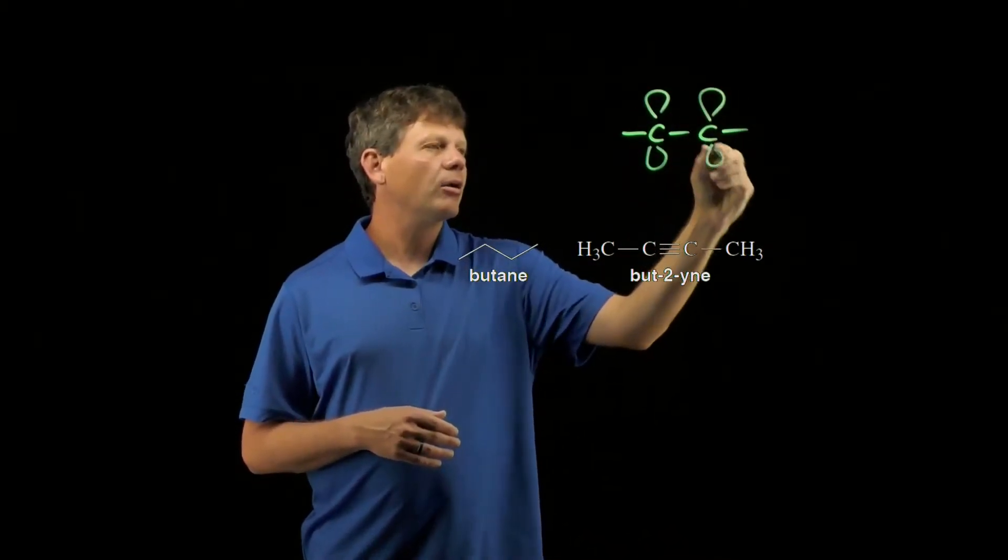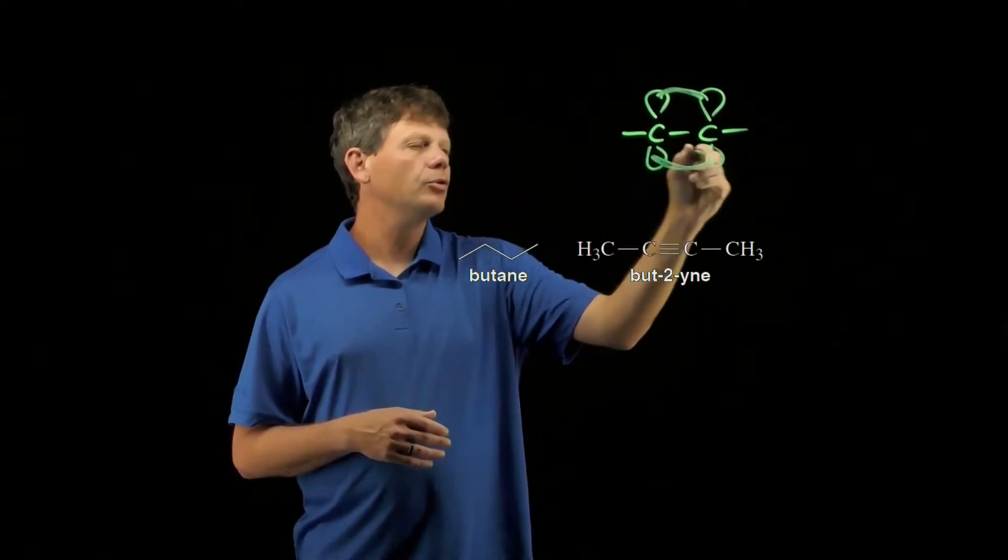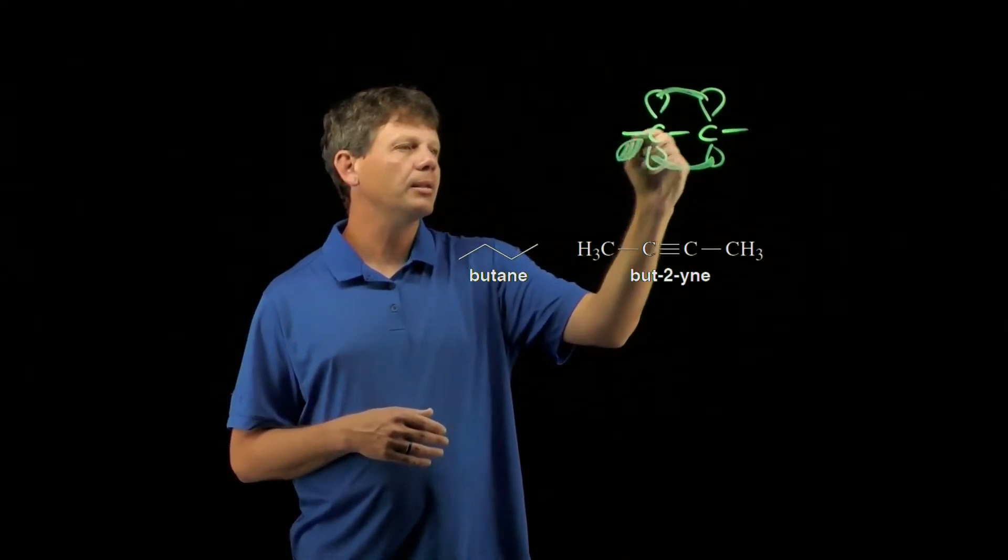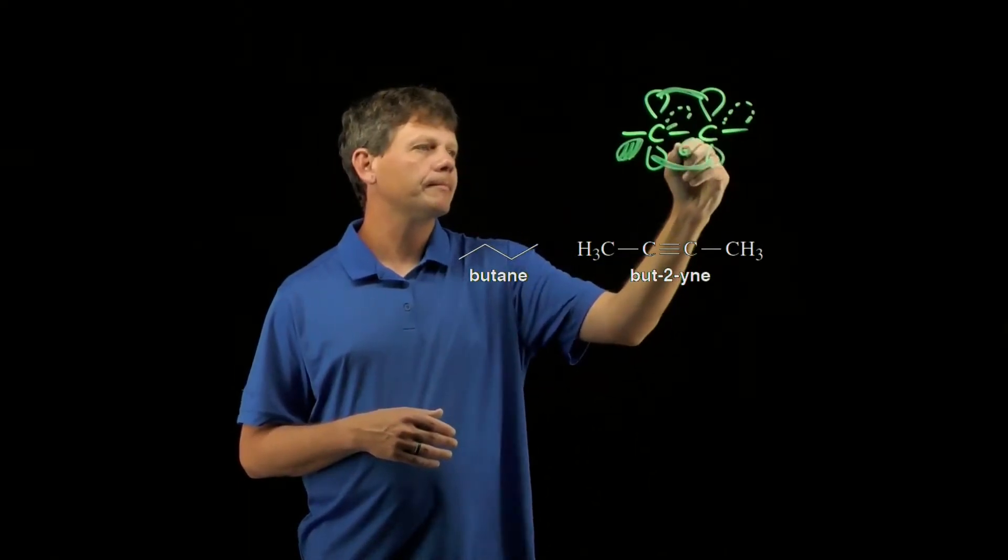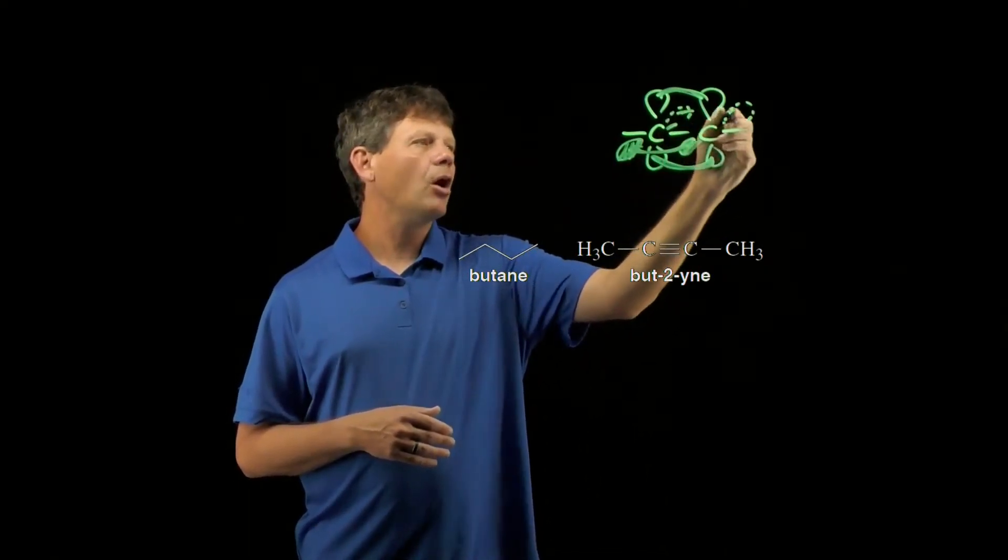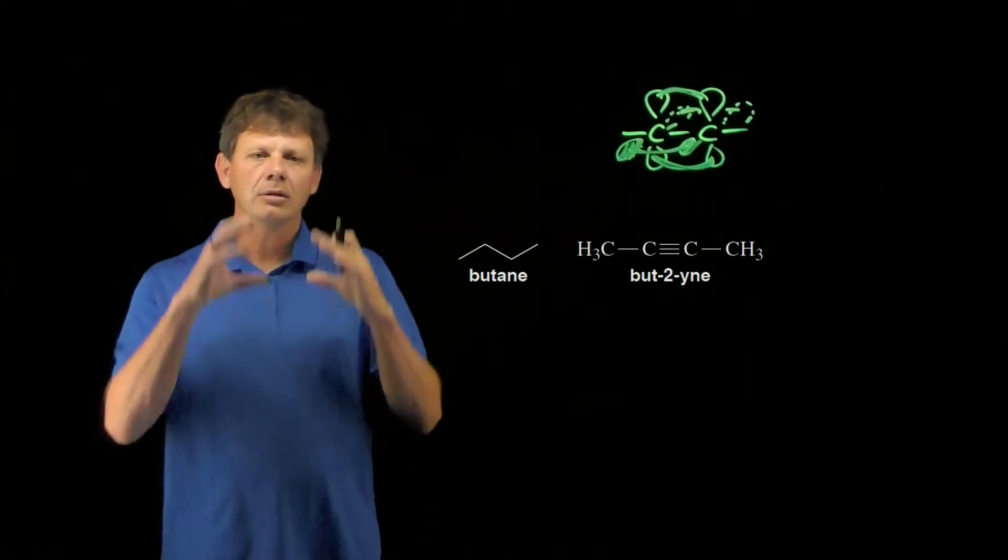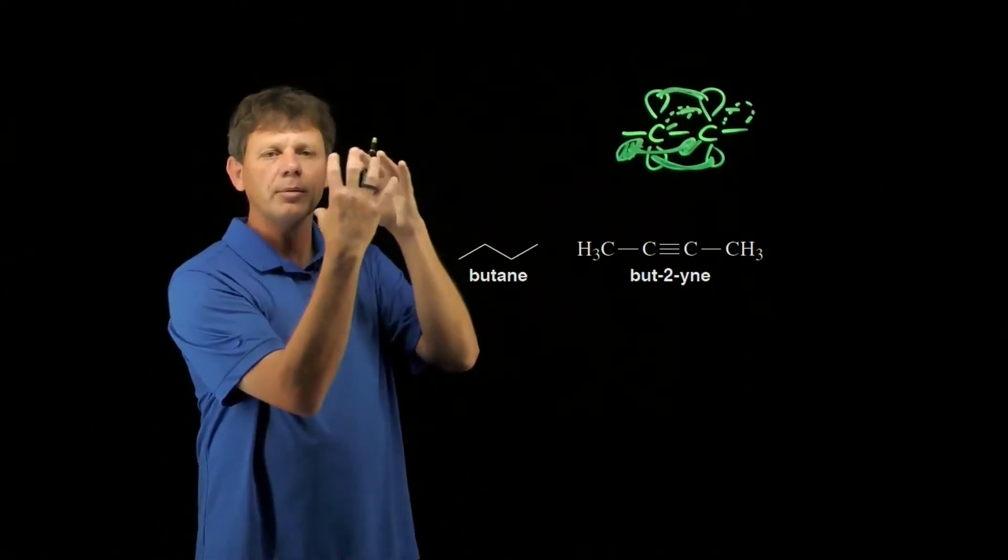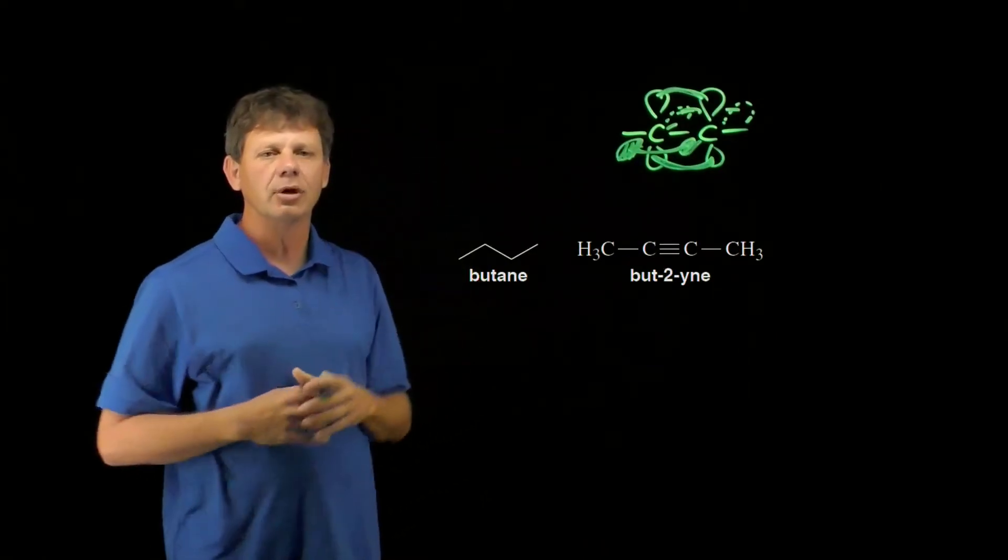Remember that the alkyne triple bond has two pi bonds, one in the plane, one going back, and having all of this electron density located in this small volume. We talk about this cylinder of electron density.